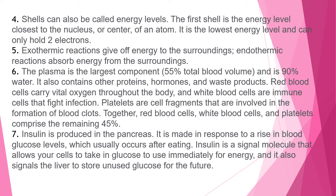Explanation 6: Plasma is the liquid component, comprising 55% of blood volume and is 90% water, containing proteins, hormones, and waste products. Red blood cells carry oxygen throughout the body. White blood cells are immune cells that fight infection. Platelets are cell fragments involved in blood clot formation. Together, red blood cells, white blood cells, and platelets comprise the remaining 45%.